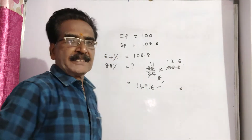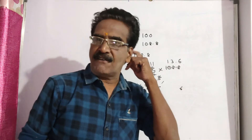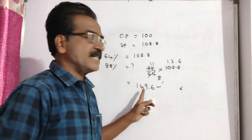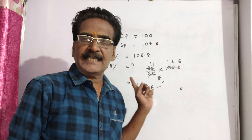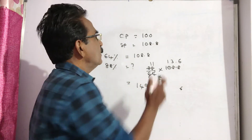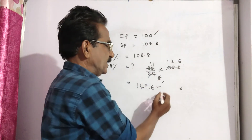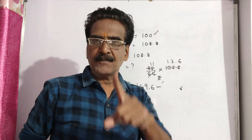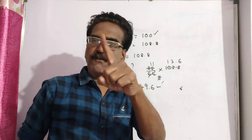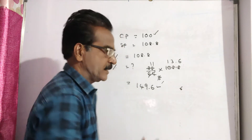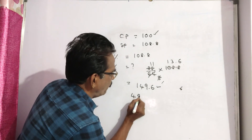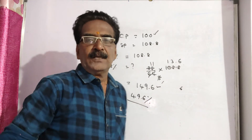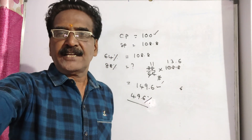So if 12 percent commission is offered, the selling price is 149.6. Cost price is 100 and sold price is 149.6, so the profit percent is 49.6 percent. Thank you friends.